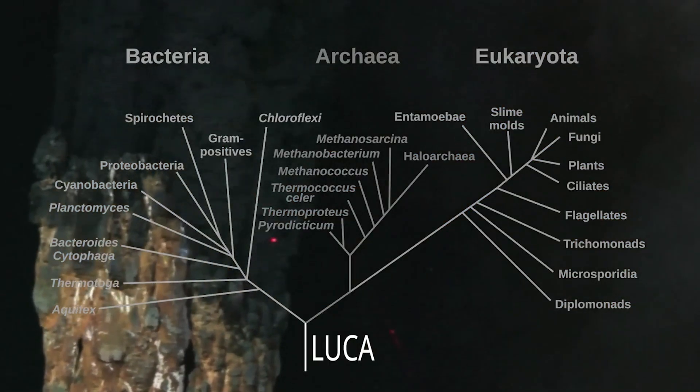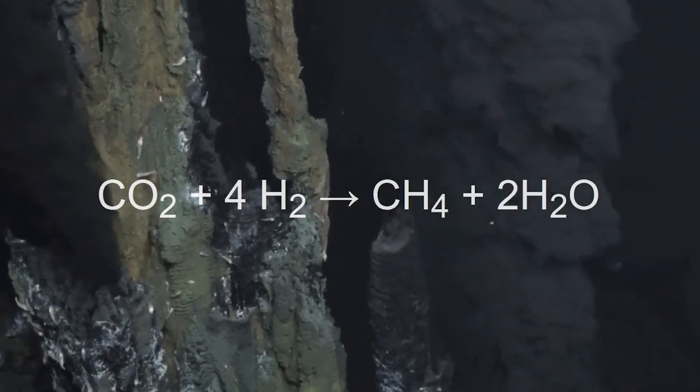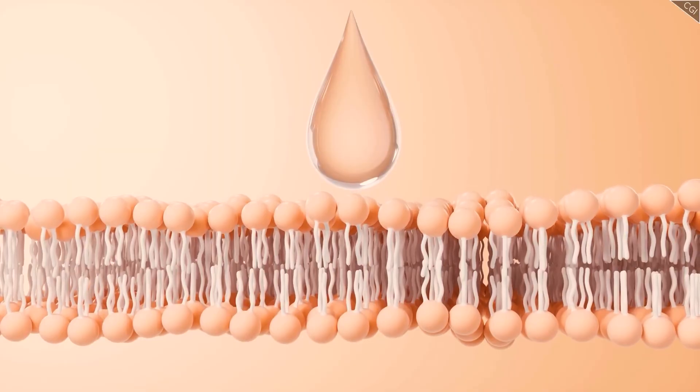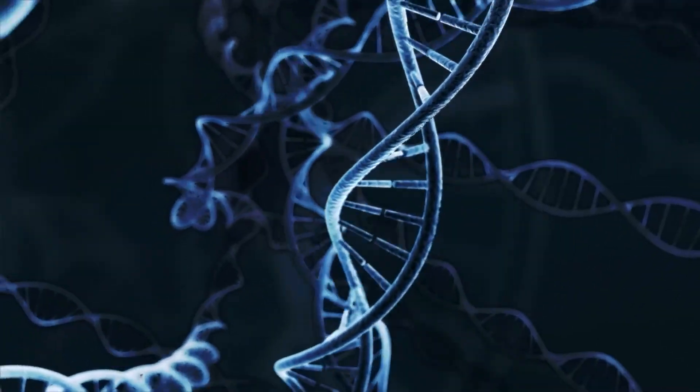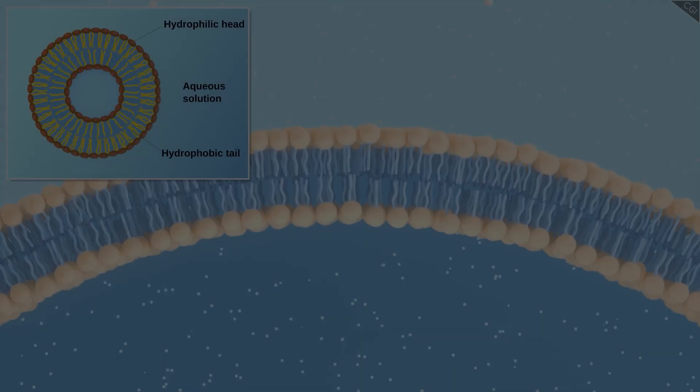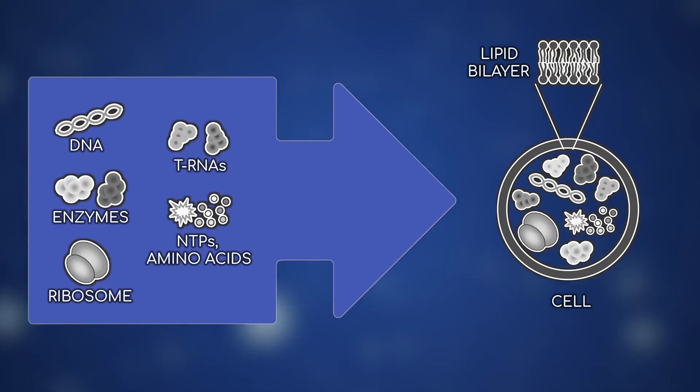LUCA wasn't just an organism. It was a turning point. The moment when chemistry became biology. But before LUCA, before membranes or RNA, there was the great unknown. The transitional world between chaos and self-replication. And here lies one of the most mysterious ideas of all. The world of protocells.